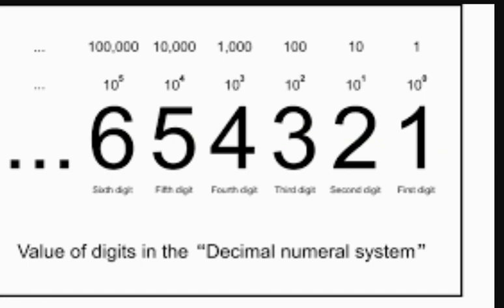The decimal system is a base 10 system because it has 10 digits, or it is radix 10. The radix of the number system is 10. The value of the digits in the decimal number can be written as shown.